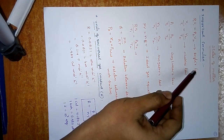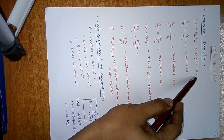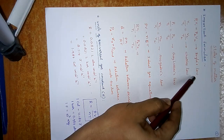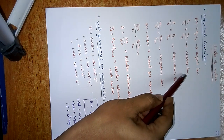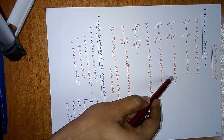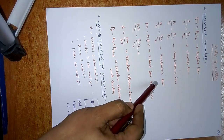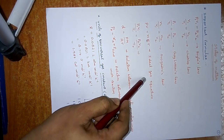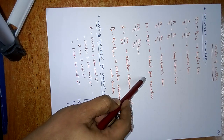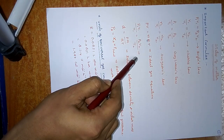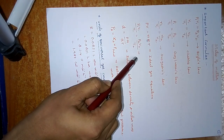First I will tell some important formulae. Boyle's law: P1V1 = P2V2. Charles' law: V1/T1 = V2/T2. Gay-Lussac's law: P1/T1 = P2/T2. Avogadro's law: N1/V1 = N2/V2. Ideal gas equation: PV = NRT.